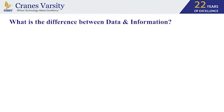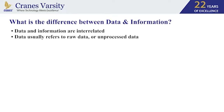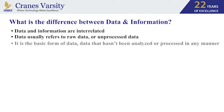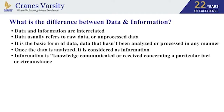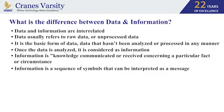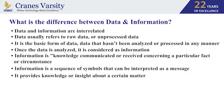Let's understand the difference between what is data and what is information — these are two different words. Data usually refers to raw data or unprocessed data; it is the basic form of data that hasn't been analyzed or processed in any manner. Once the data is analyzed, it is considered to be information — a knowledge communicated or received concerning a particular fact or circumstance. Information is a sequence of symbols that can be interpreted as a message, providing knowledge or insight about a certain matter.